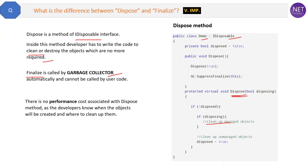There is no performance cost associated with the dispose method, because the developer knows when the object will be created and where to clean it up. The code will only execute when you want it to — when you want to make the objects null — otherwise it will not execute.